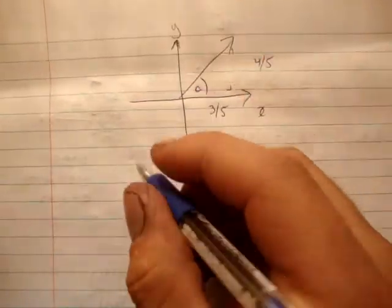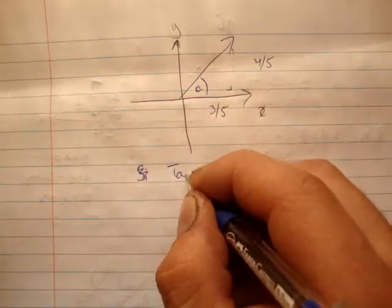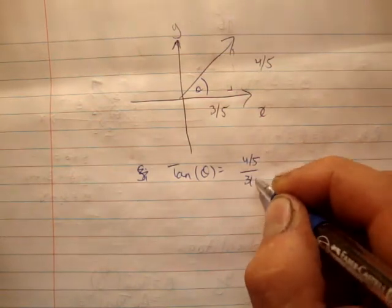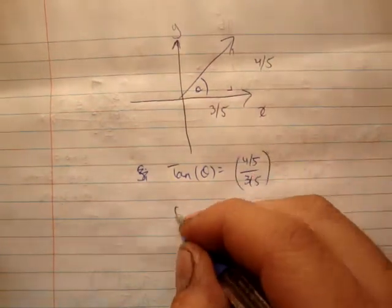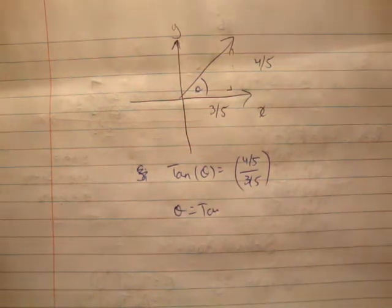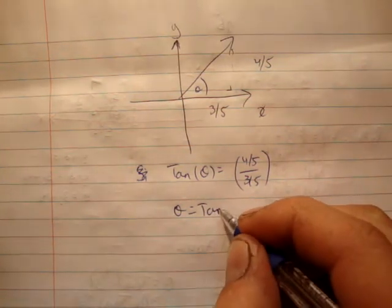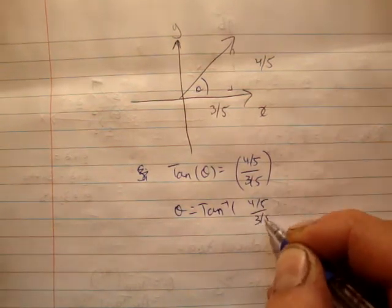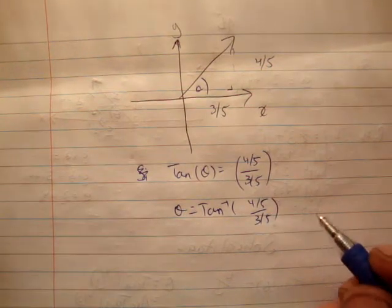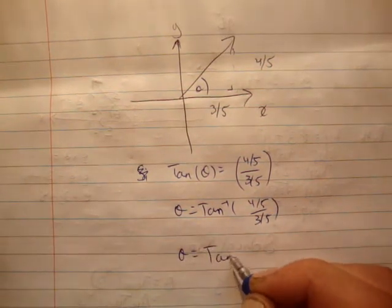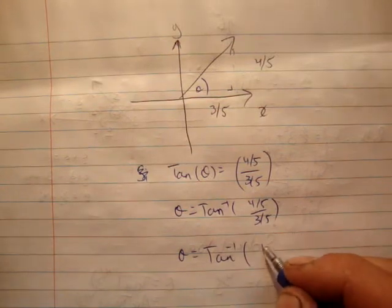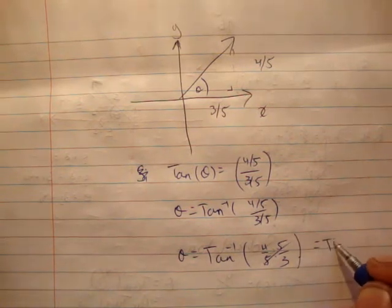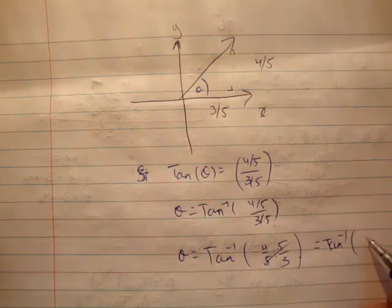So tan theta is equal to 4 fifths over 3 fifths. And theta is equal to inverse tan of 4 fifths over 3 fifths. So theta equals inverse tan of 4 over 5 times 5 over 3, equals inverse tan of 4 over 3.